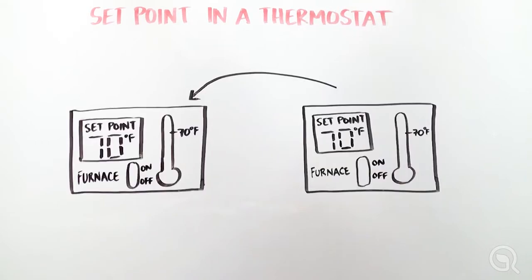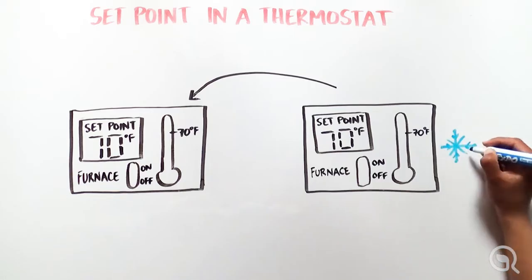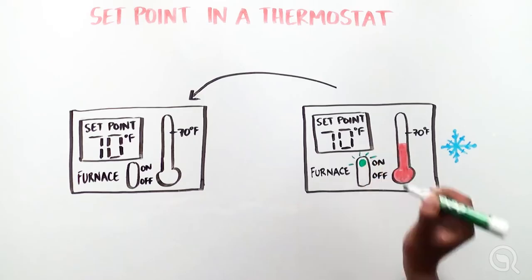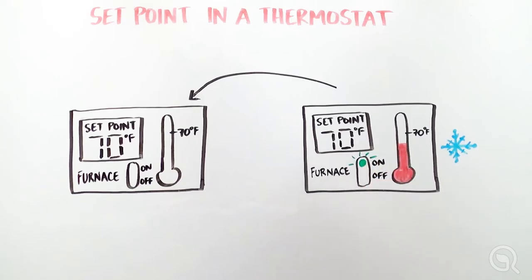A simple way to think about a set point is how we use a thermostat to maintain house temperature. Once you set the temperature, the system monitors when it gets too cold and turns the furnace on to heat the house.